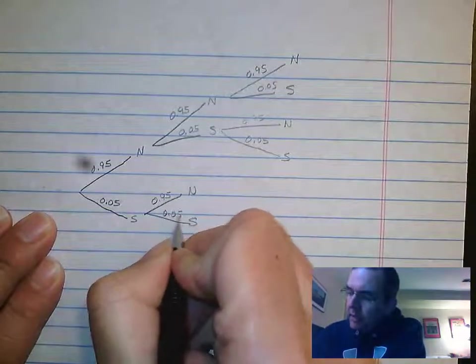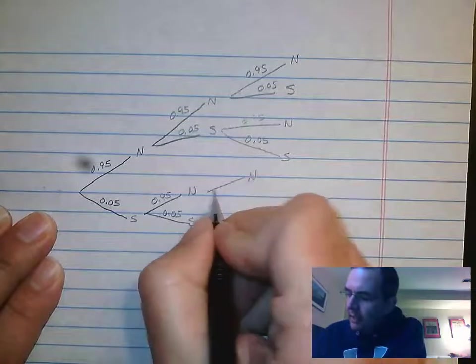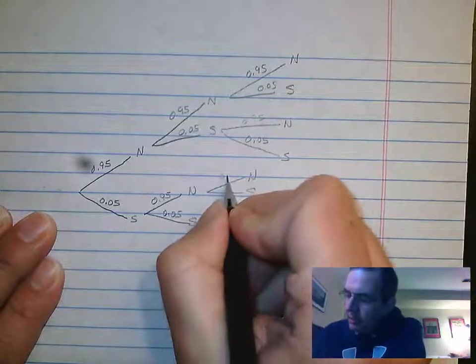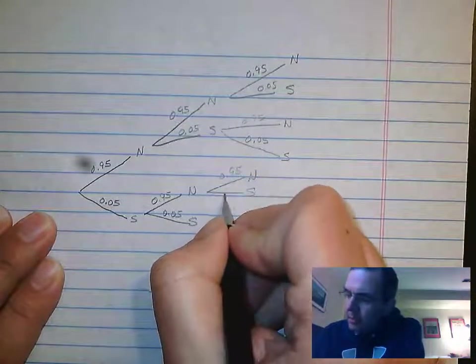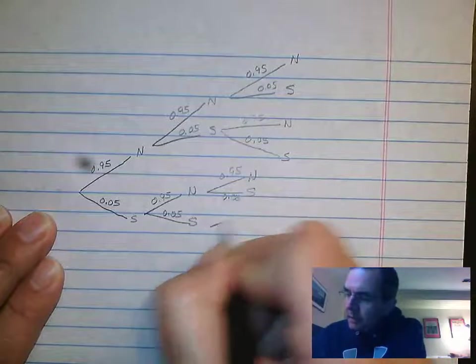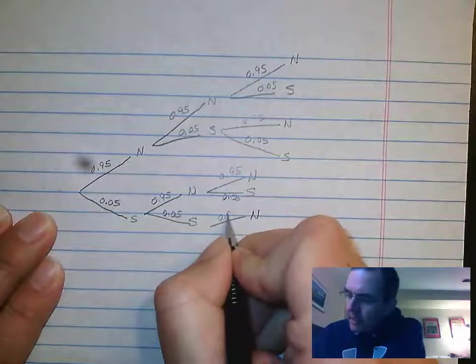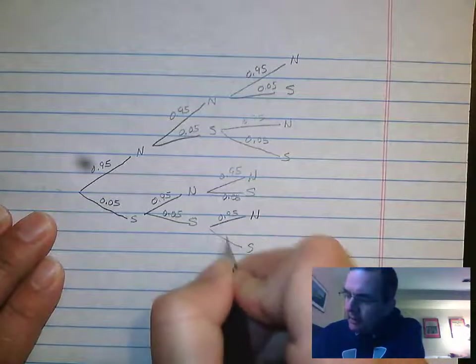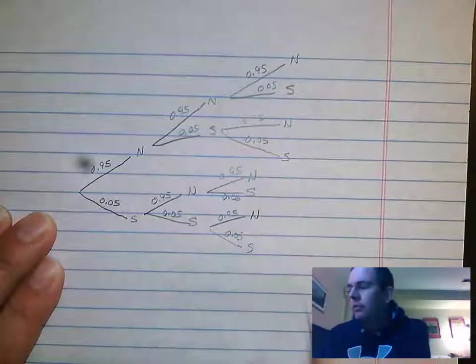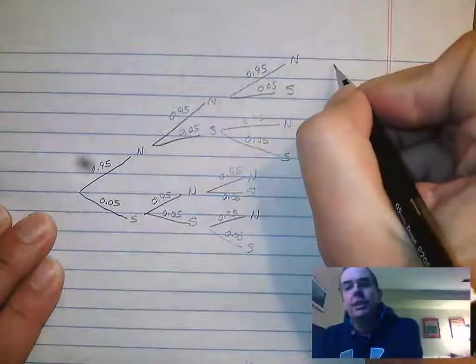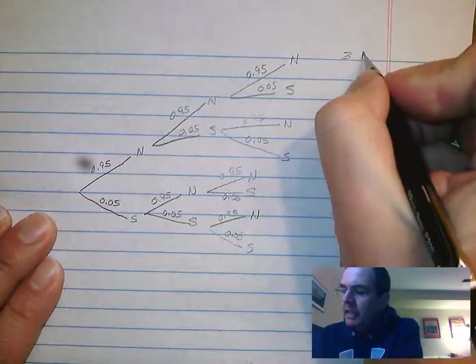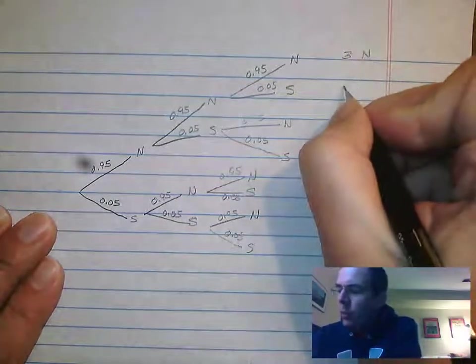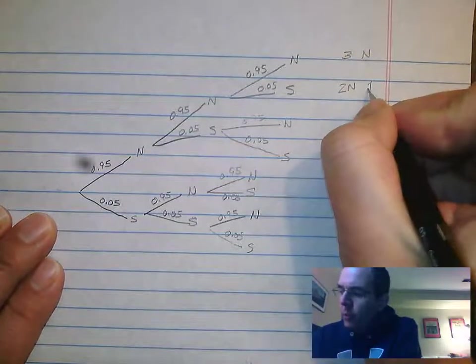0.05, not significant, significant, 0.95, 0.05, not significant, 0.95, significant, 0.05. So this first branch here is three not significant tests. The second one is two not, one yes.